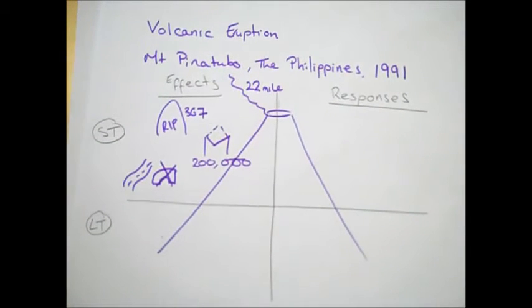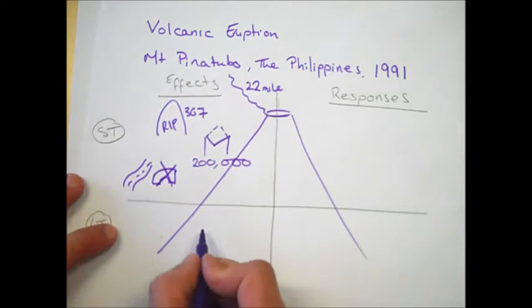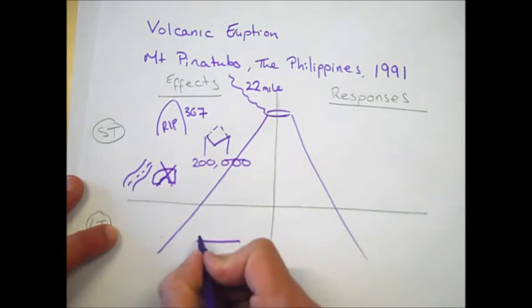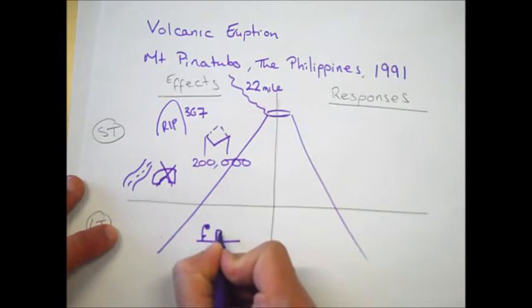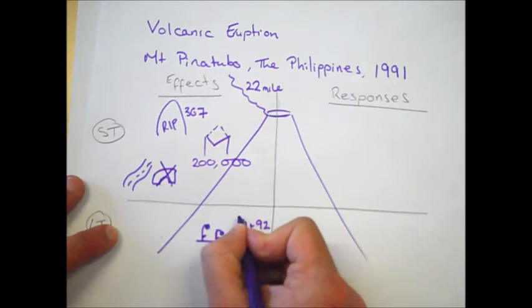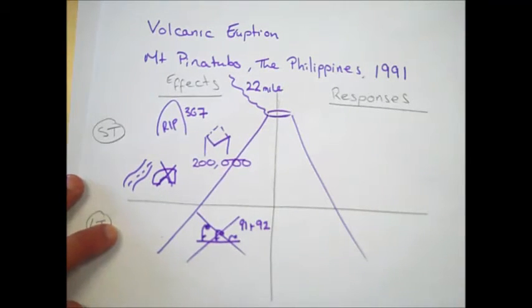Moving on to the long-term effects, there's quite a few long-term effects that we can think of here. Firstly, the ash settled on the crops and that resulted in them being buried in ash. The 91 and the 92 harvests failed, and that resulted in huge economic impacts for farmers in the Philippines who relied on their crops for their source of income.